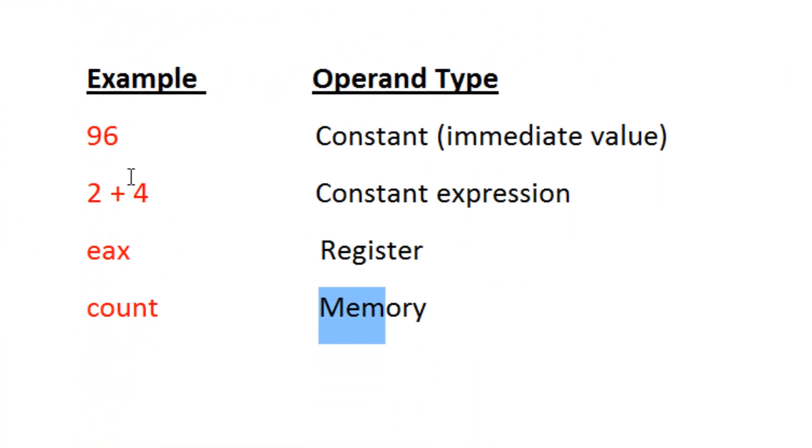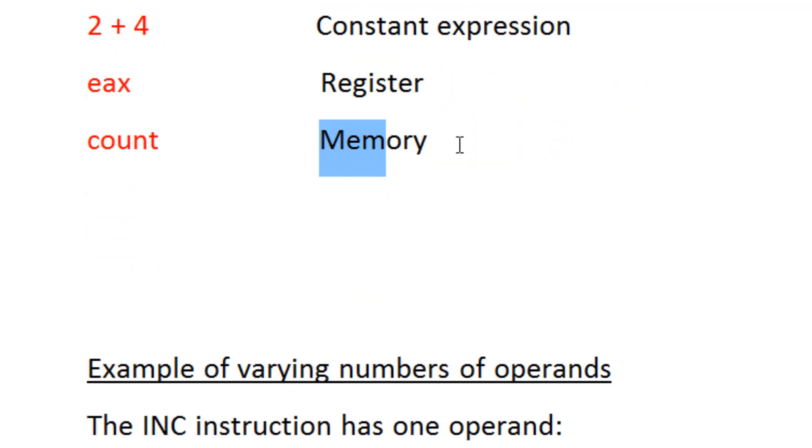Here are some examples. 96 is a constant immediate value. 2 plus 4 is a constant expression. EAX is a register and count is memory.